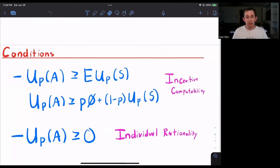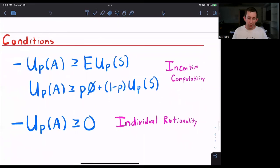We also have an individual rationality constraint, which says that while the pilot would very much like to be employed, the utility to the pilot of accepting needs to be greater than or equal to the utility of quitting, which is zero.